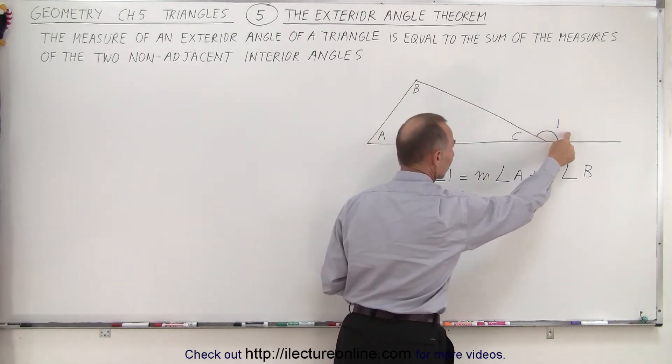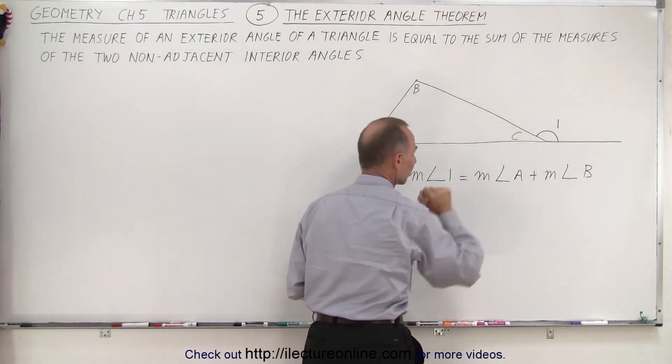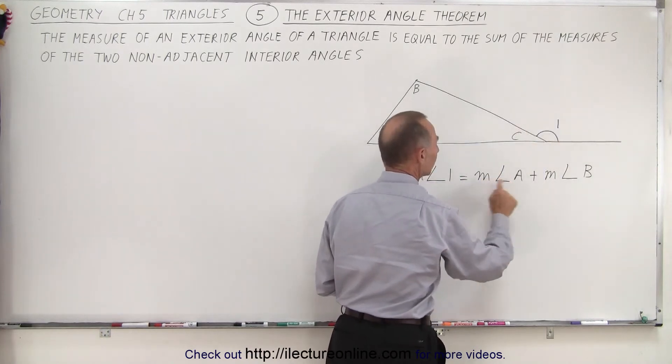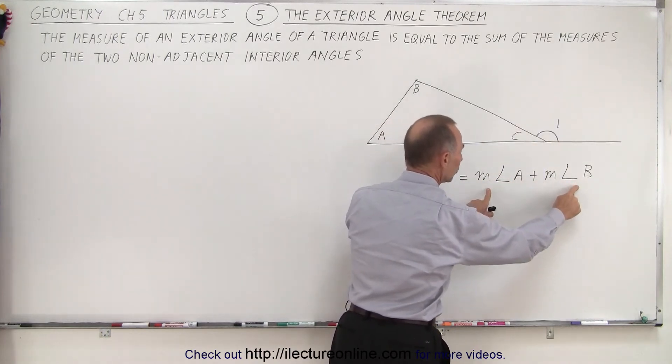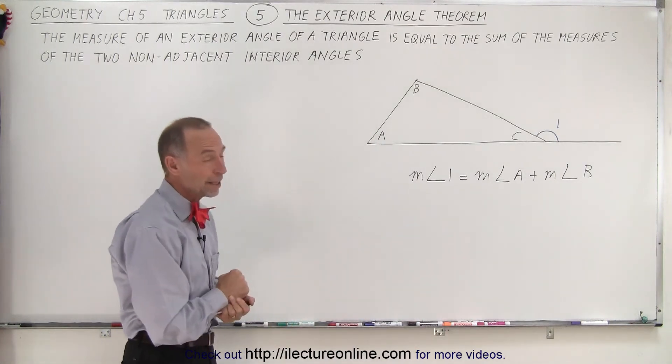This is the adjacent angle to the exterior angle, and these are the two non-adjacent angles to the exterior angle. Therefore, the measure of exterior angle 1 equals the sum of the measures of the non-adjacent angles A and B.